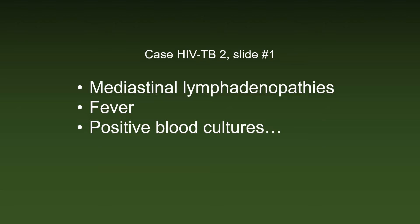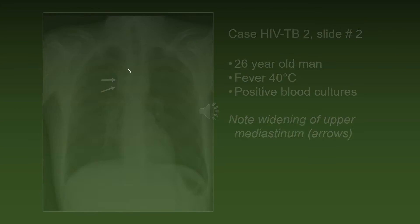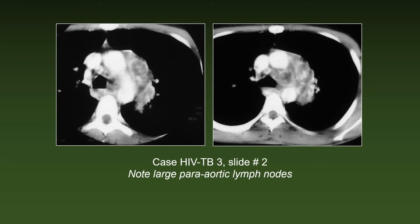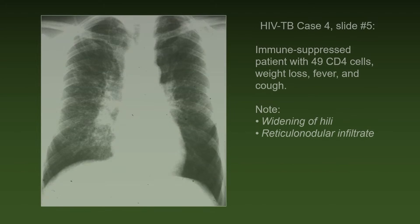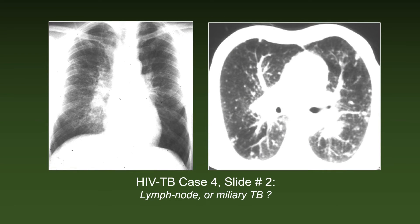Case number two illustrates mediastinal lymphadenopathies, fever, and positive blood cultures in a 26-year-old man. Note the widening of the upper mediastinum. Here is another similar case with MTB isolated from a supraclavicular lymph node. The large para-aortic lymph nodes are particularly visible in the CT scan. This patient also presented with weight loss, fever, and cough. Note the widening of the hila and the reticulonodular infiltrate. It is hard to say whether this is lymph node or miliary tuberculosis.